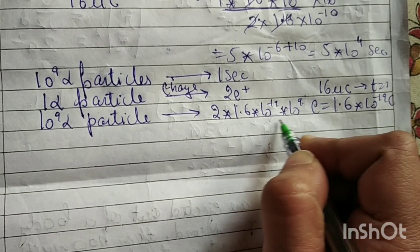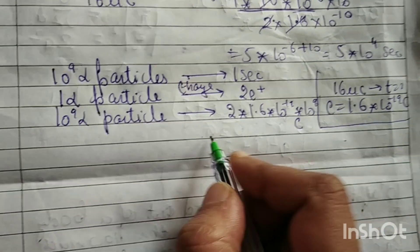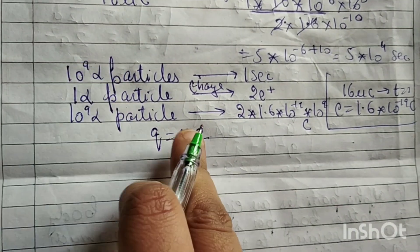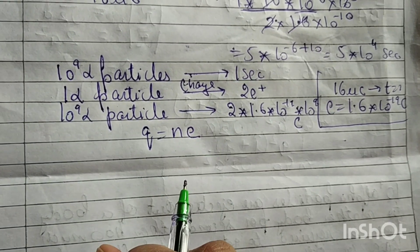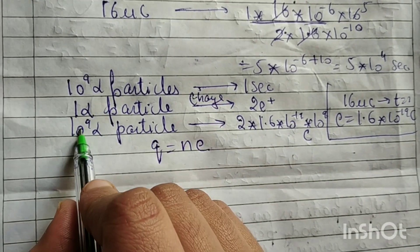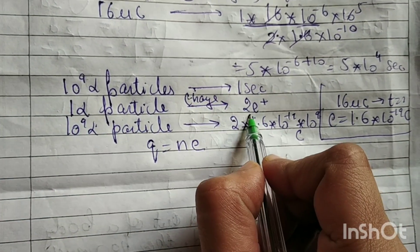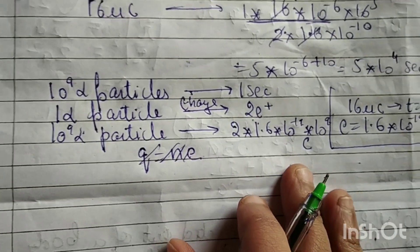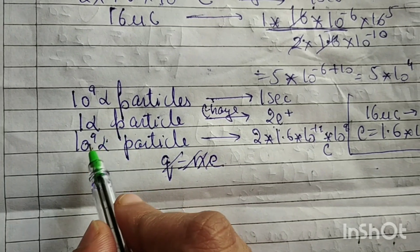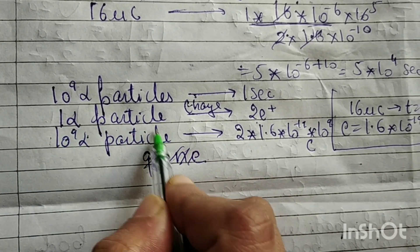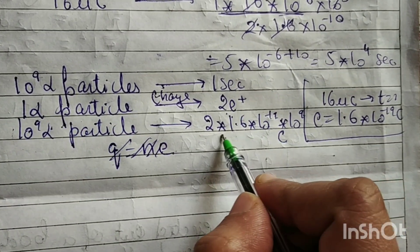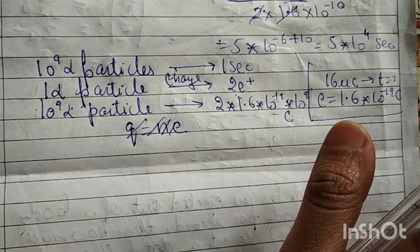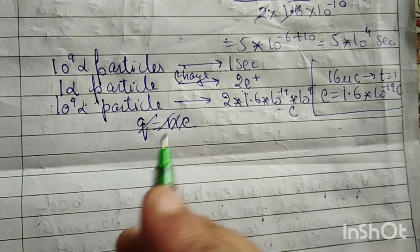This gives us the charge in coulombs. You can also use Q equals N into E. Multiply 10 to the power 9, and because one alpha particle carries a charge of 2E, you multiply by 2 as well. So we have converted 10 to the power 9 alpha particles into charge — since one alpha particle has a charge of 2E.